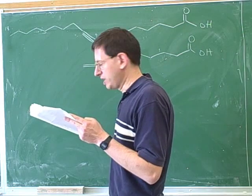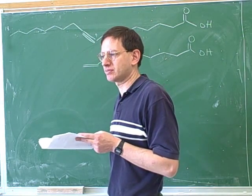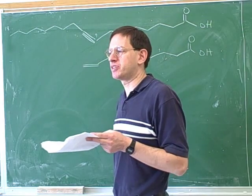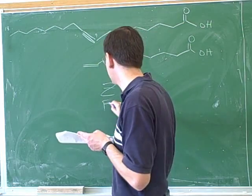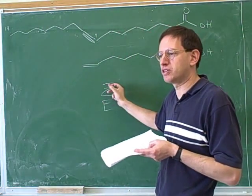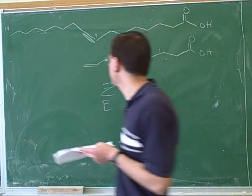Do you remember, does Z mean that the two substituents should be cis or trans to each other? Cis. Remember we were saying that the mnemonic could be Z stands for zusammen and E stands for opposite sides. So Z means the two substituents are on the same side of the double bond and E means they are opposite sides.